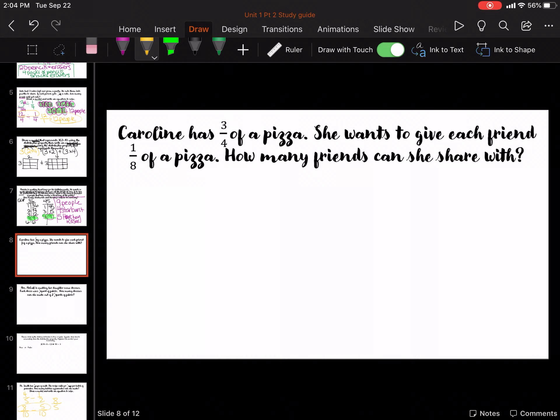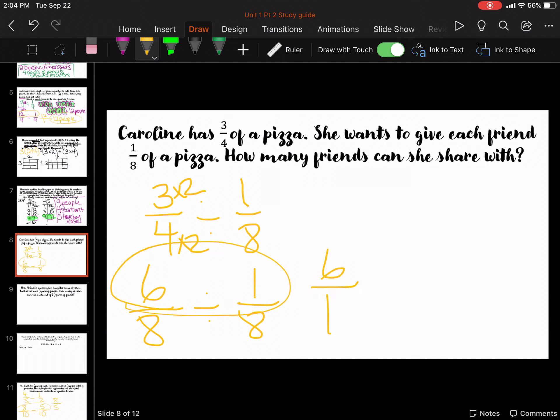So, Caroline has 3 fourths of a pizza. She wants to give each friend 1 eighth of a pizza. How many friends can she share with? Here we go. 3 fourths divided by 1 eighth. Common denominator of 8, 1 eighth. So, times 2 and times 2. 6 divided by 1 is just 6. How many friends? 6 friends.